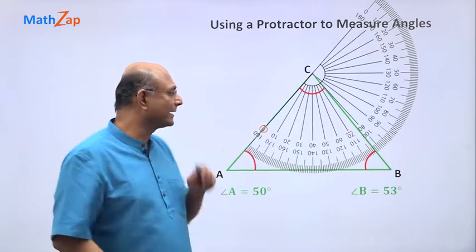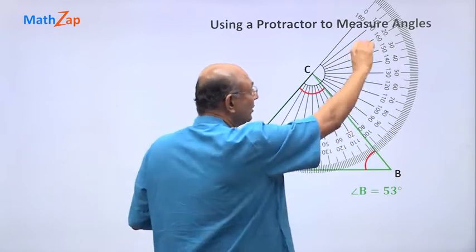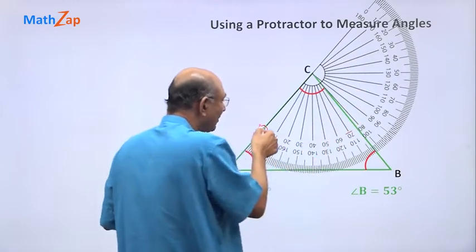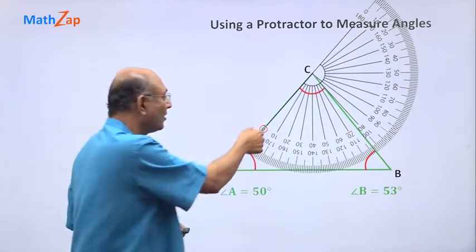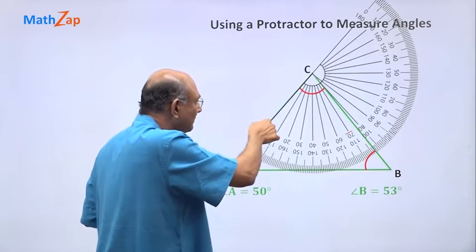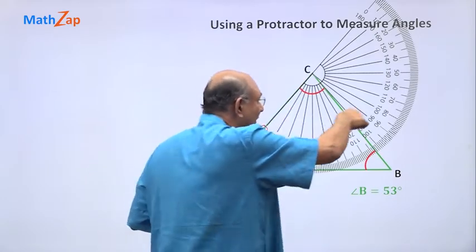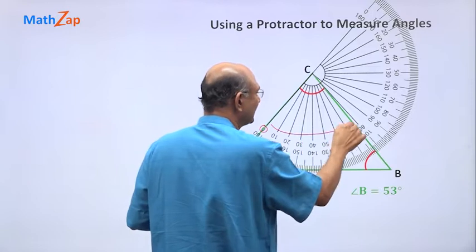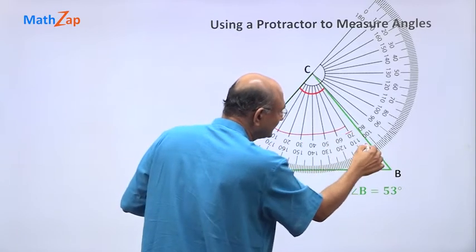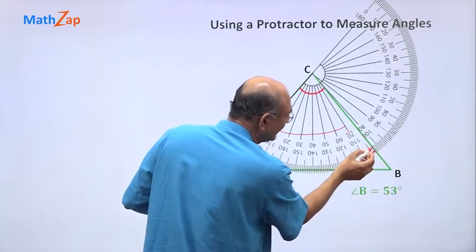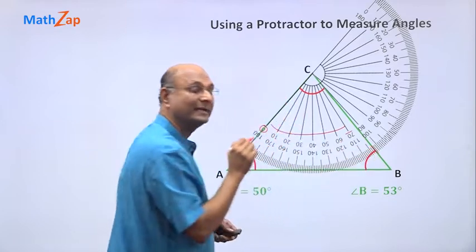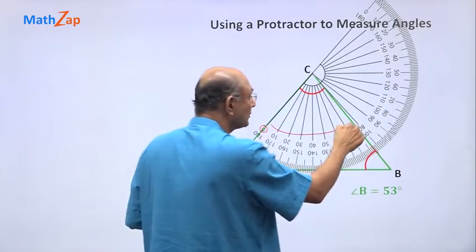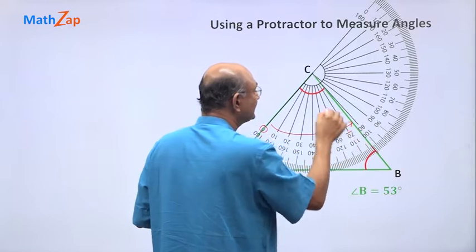Don't count this way, count this way. Always count from the base of the protractor. So this arm is zero, so that's how I count. So I count like this, but this is only 70, this is 75, 76, and so that line there is 77. So till here it is 77 degrees. So angle C is 77 degrees.